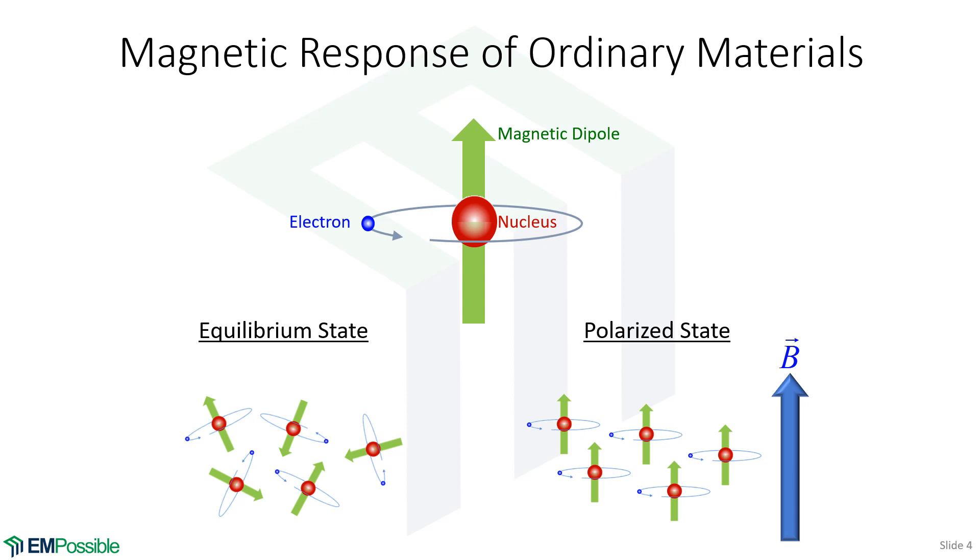For magnetic response, we have circulating charges—electrons orbiting around the nucleus. If this pattern is more like a donut than a sphere, we get a magnetic dipole through the axis of rotation. In most materials, these magnetic dipoles are randomly oriented. But if a magnetic field comes along, all these magnetic dipoles align with it.